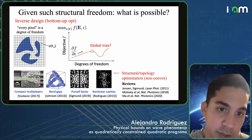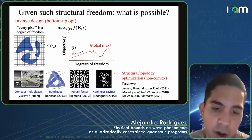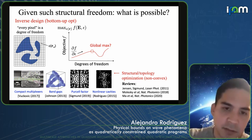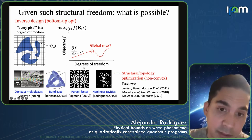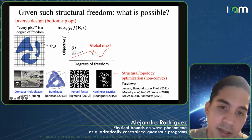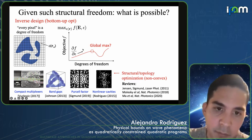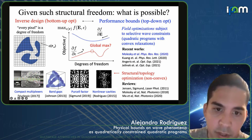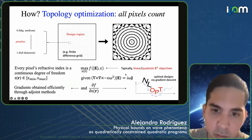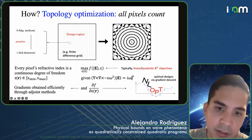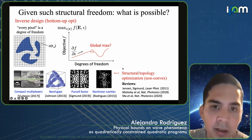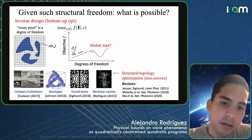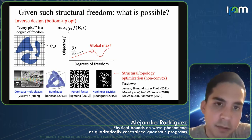The answer is we don't, because the problem is effectively a non-convex optimization problem. There's no way to guarantee that you're getting a global optimum; the relationship between the fields and the permittivities is highly nonlinear. You have to invert this operator, and that means you have no a priori guarantees of optimality.